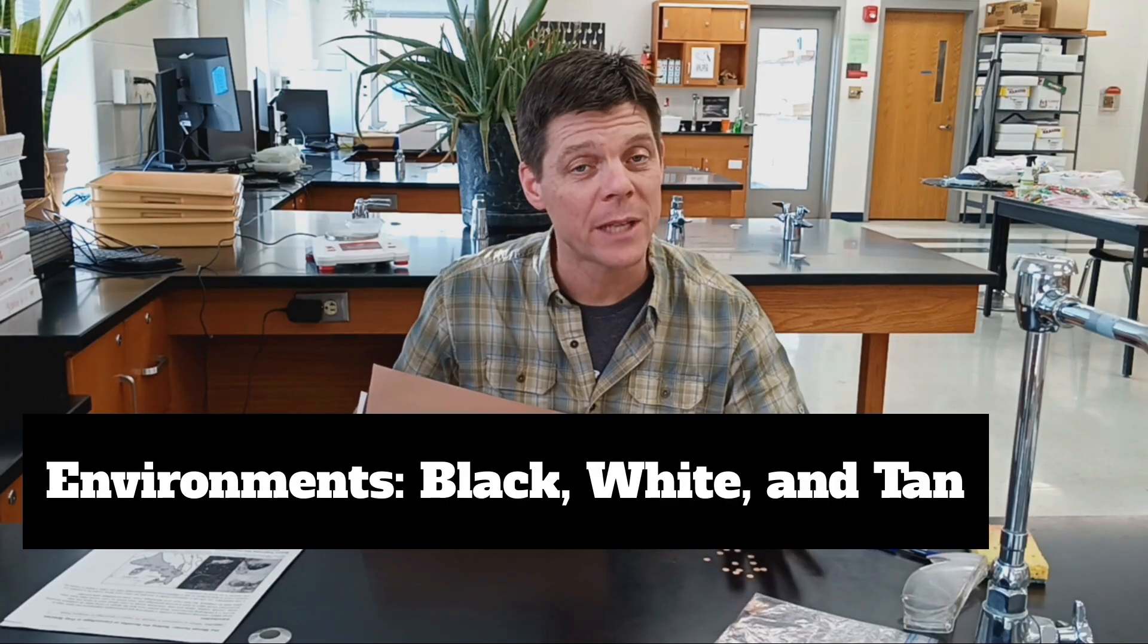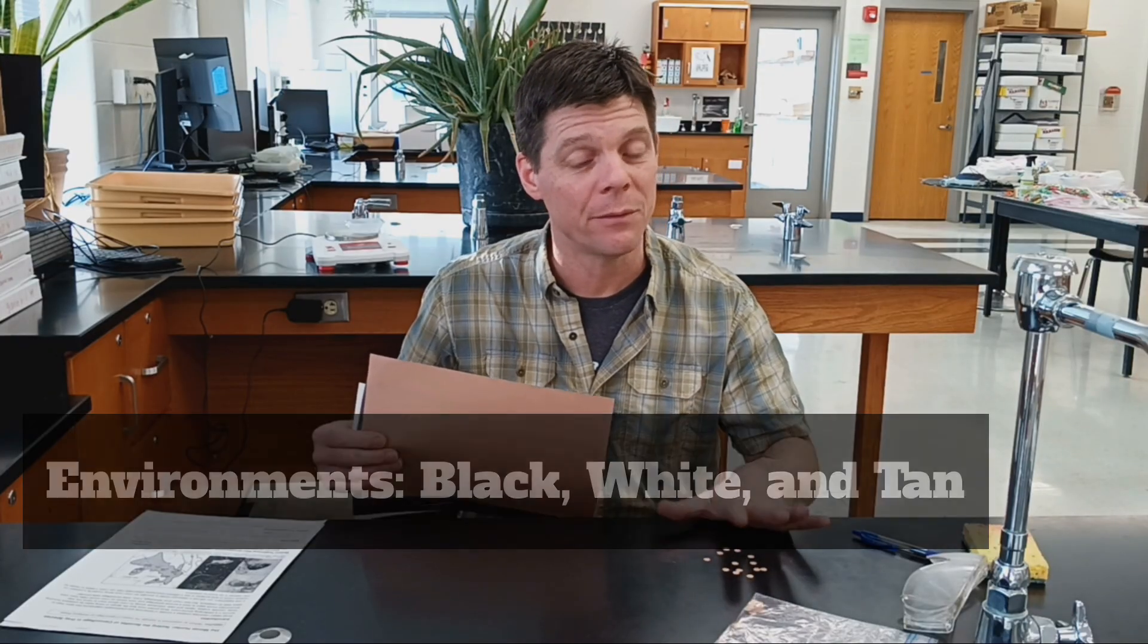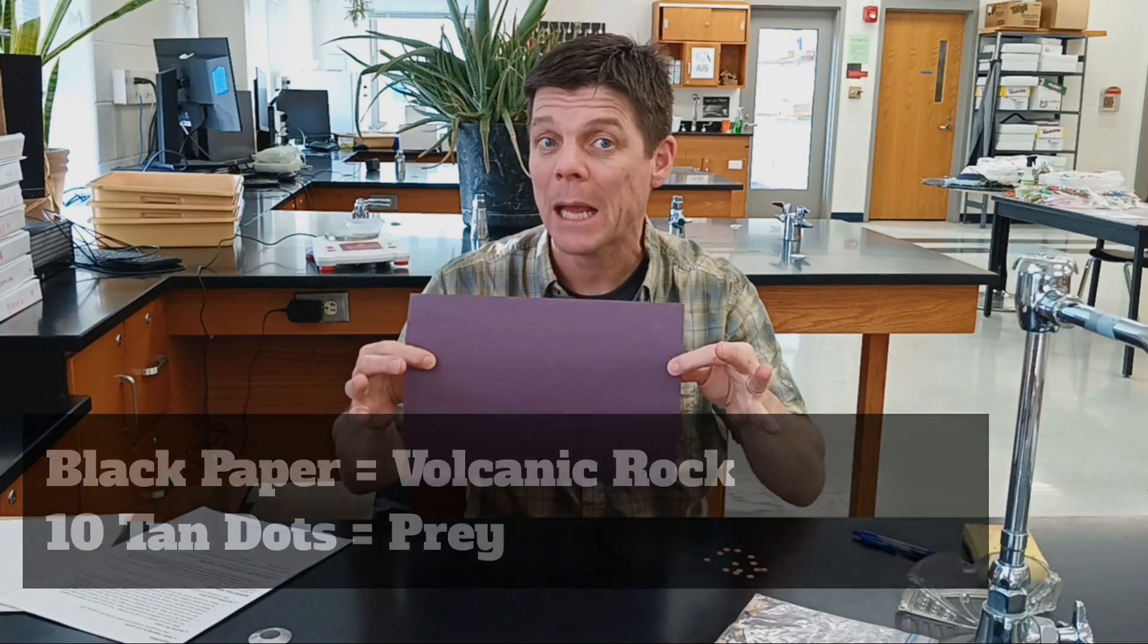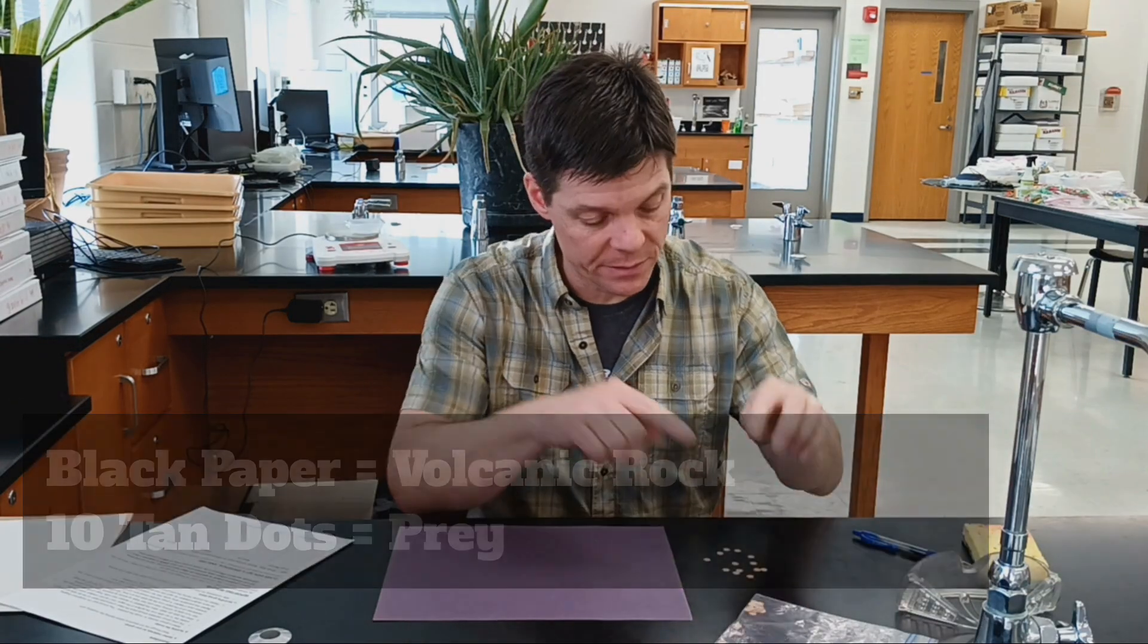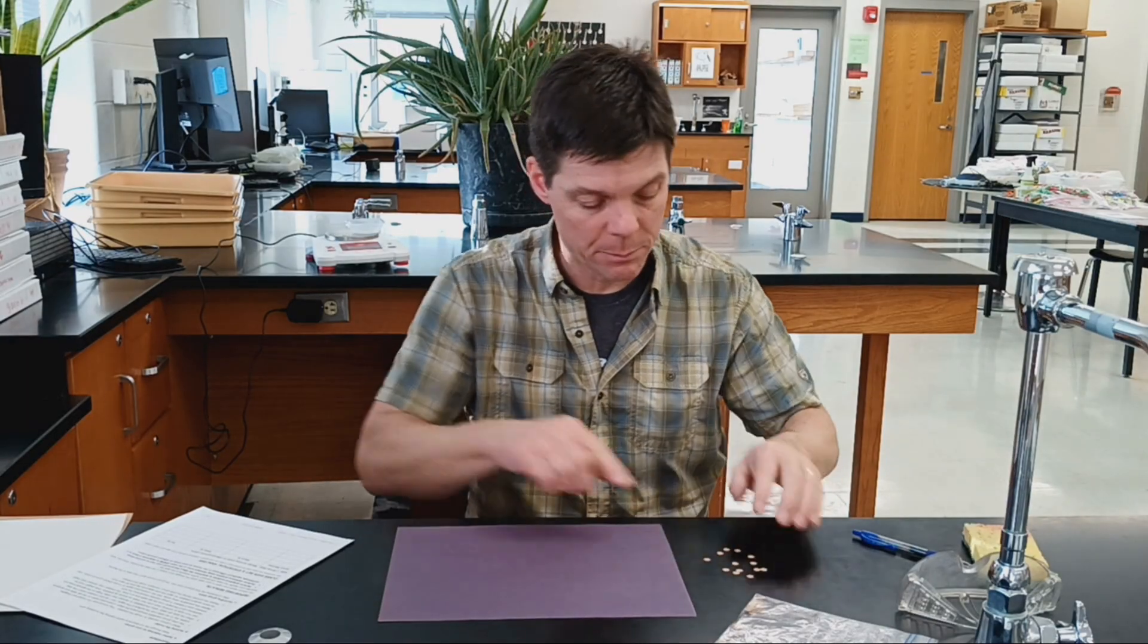We will test the survival time of the dots on three different environments. The procedure says we're picking a group member to be the predator. I am going to do that because there's nobody else here right now. Next, let's set up our first environment. The black paper represents volcanic rock. Now I'm going to place the 10 dots onto my black field.